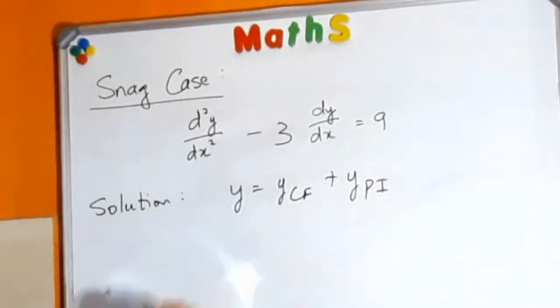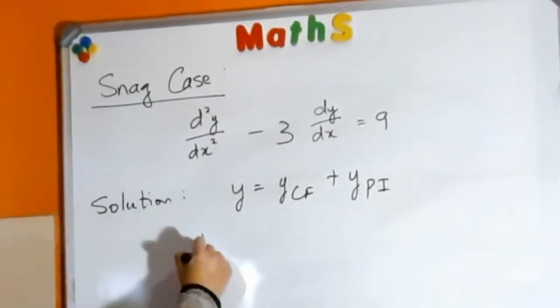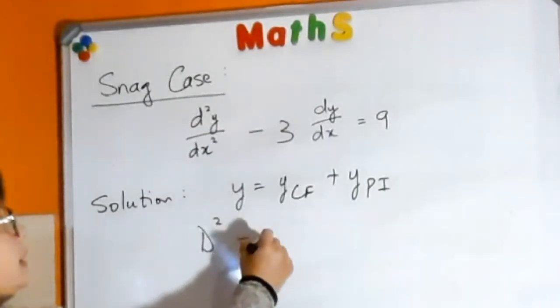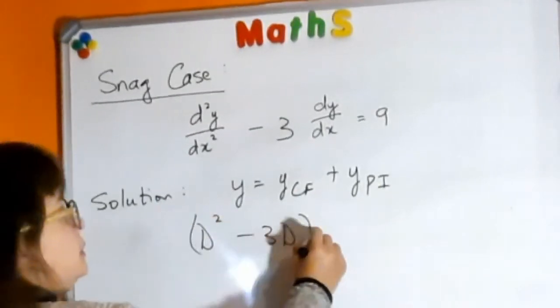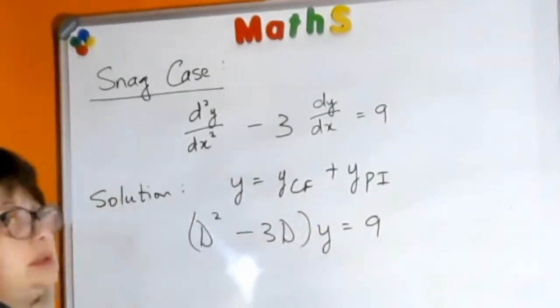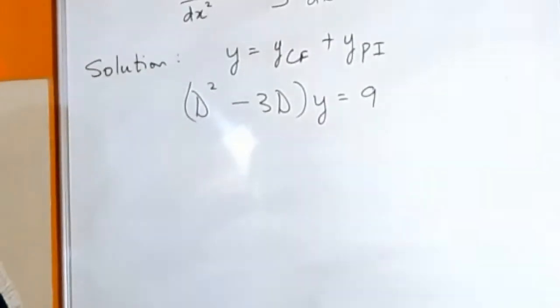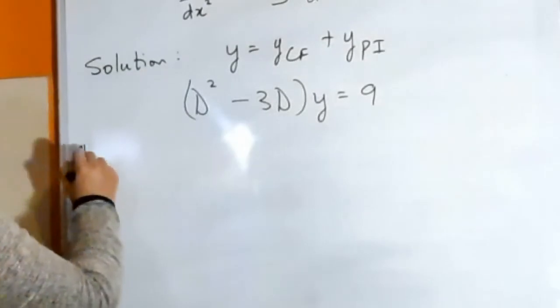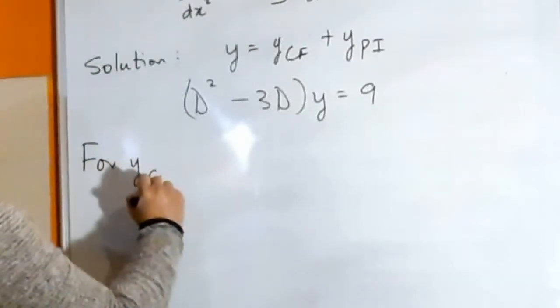Your equation you can write as d² minus 3d times y equals 9 using d operators. So we're going to start off with our complementary function, so for y_CF.